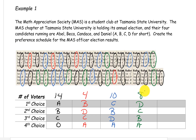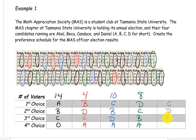Then we move on to the next uncircled ballot, and that would be C, D, B, A. And that was our last ballot, so there was only one of those.